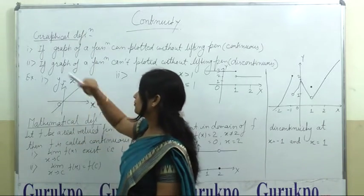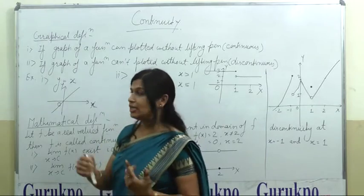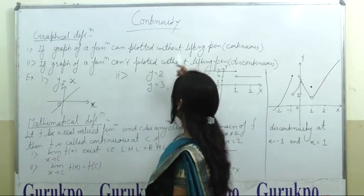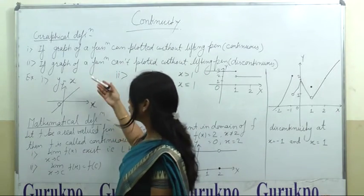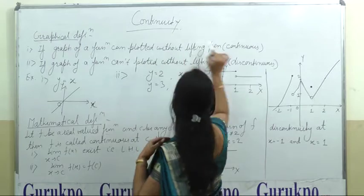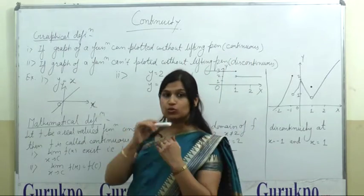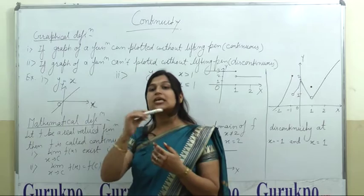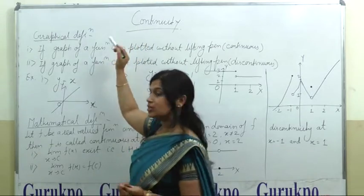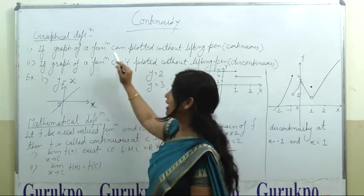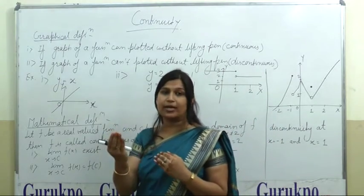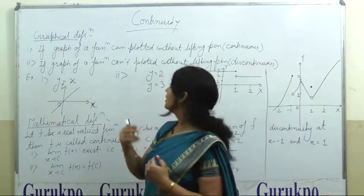What do we mean by continuity? When you draw a function graphically, there are two types of graphs. One is if you can draw a graph of a function without lifting your pen — that is called continuity, because drawing a graph without lifting your pen means you can draw it continuously without any break. So the first one is called a continuous function and the second one is called a discontinuous function. The point where we lift the pen is called the point of discontinuity.